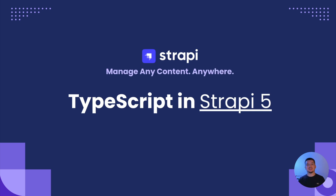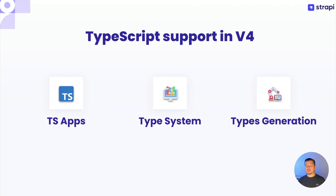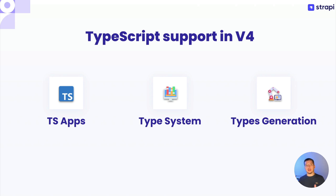Hey everyone. Today we are diving into TypeScript — something that's been on a lot of minds for the past few years, especially with the big changes coming in Strapi 5. Back in Strapi 4, we started building TypeScript support: first making it possible to create applications using TypeScript and letting Strapi handle compilation, then adding an experimental type system and typed APIs to make interacting with your data easier. Finally, we introduced automated type generation for content types and components.